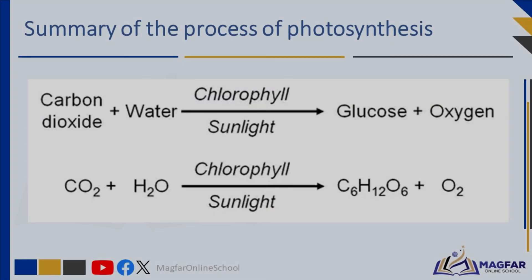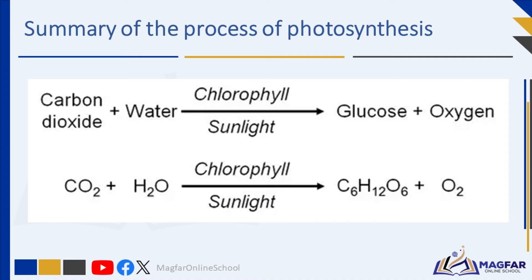The diagram shows the process of photosynthesis in a plant. Photosynthesis begins when light energy from the sun makes contact with the green parts of the plant. Chlorophyll absorbs the light energy, which is then used to bind carbon dioxide chemically with water. A food molecule known as glucose is formed in a series of reactions, and oxygen is also produced. Some glucose is used by the plant and some is stored as starch, while oxygen is released into the atmosphere as a by-product gas.